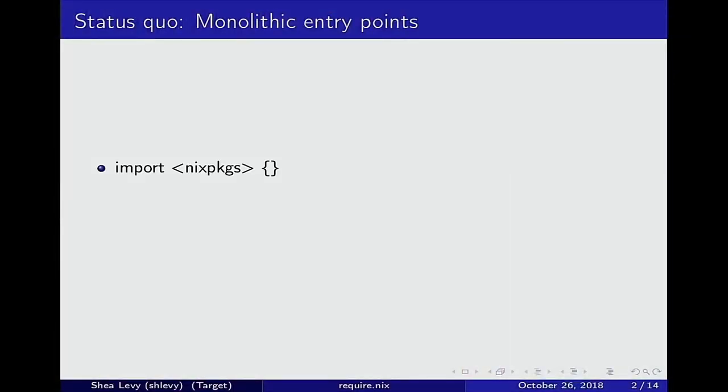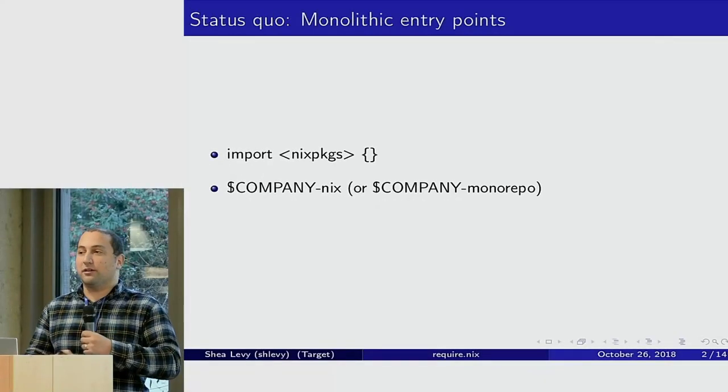Before I get to what Require.Nix is, I'm going to go through some of the problems that inspired it. The first status quo in the Nix world today is that we're a community of monolithic entry points. Almost every Nix expression outside of Nix packages has that one import line at the top, and all of the useful functionality is pulled from there. Or maybe you use builtins.fetchgit, or your company has its own Nix packages fork, or a company Nix repo, or a big monorepo. Either way, Nix projects revolve around some big central repository of all Nix functionality.